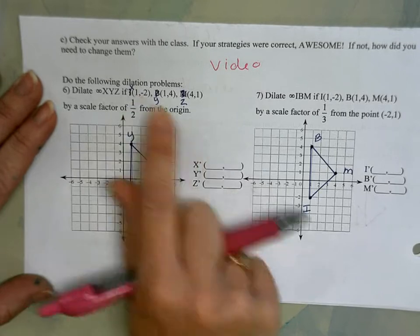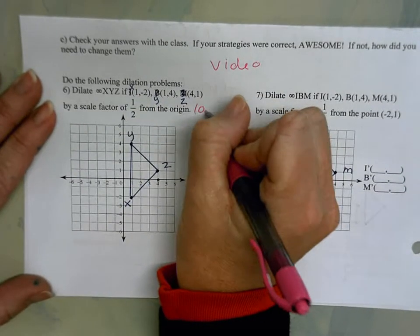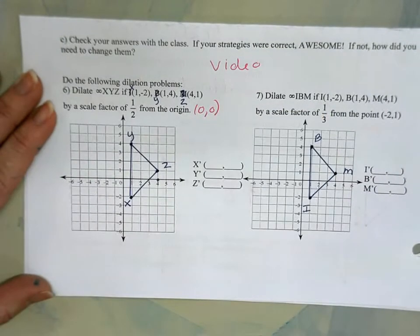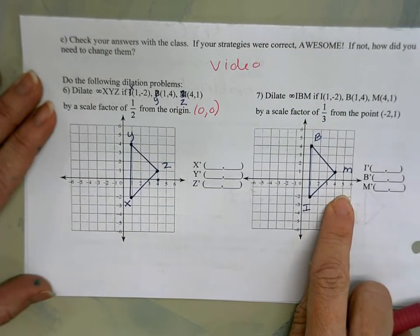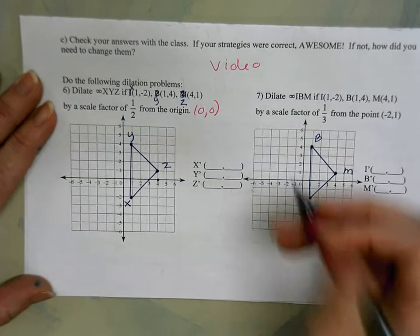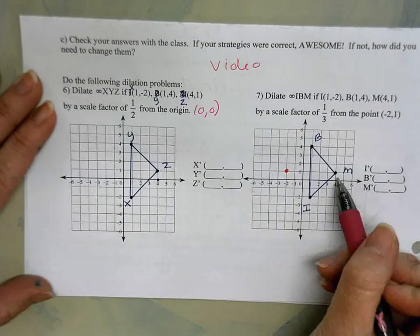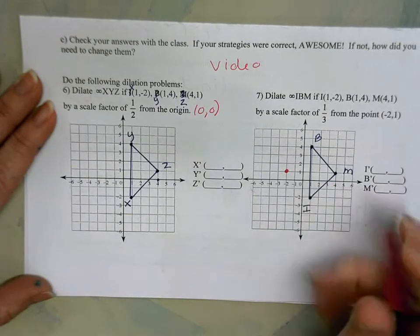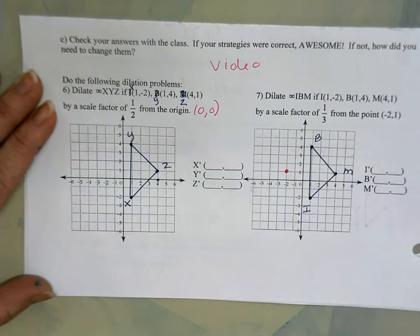And the reason you can do that is because these coordinates are telling you their distance from the origin, or your distance from point (0,0). Whereas here in the second question, now our center is going to be at (-2,1), and so you're going to figure out the distance that each point is from that center and then use the scale factor to determine the new distance.